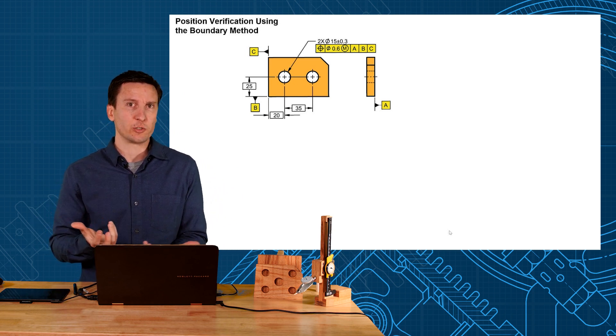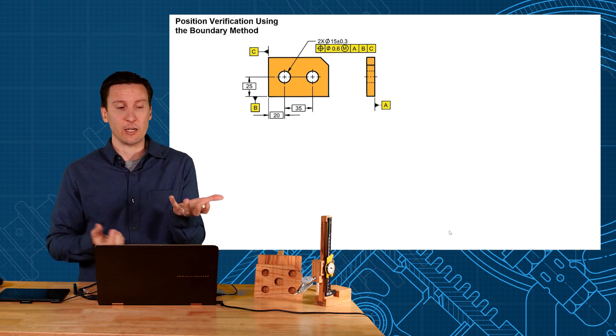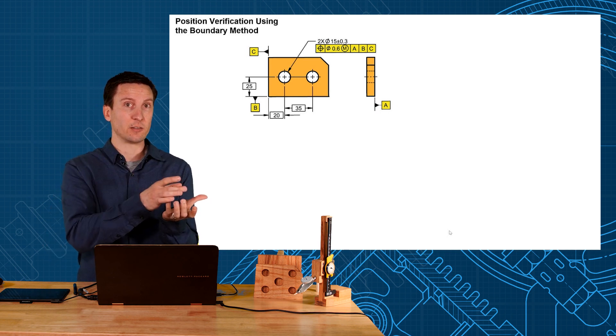Another way we can check the position though is just have a gauge, a functional gauge, a set of worst-case pins, and if it fits, it ships.